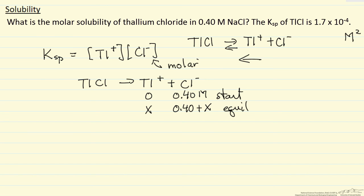And we are going to solve for x. And this will determine how much of our salt went into solution. So the product here, 1.7 times 10 to the minus 4 is going to equal thallium concentration times chloride concentration.